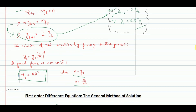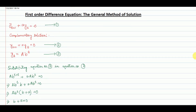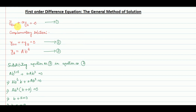We will recall this solution while dealing with the general solution of a first order difference equation. Let us discuss the general method of solution. We assume a standard form of a first order difference equation: y(t+1) + a·y(t) = c, and we number this equation 1. This equation has two solutions: one is the complementary solution and another is the particular solution. The complementary solution is the solution of the equation when c = 0. Now if we apply the iterative method of solution to this equation, the solution will be y(t) = A·b^t.